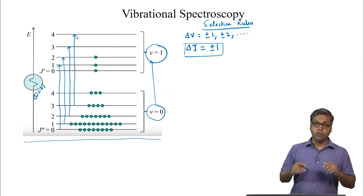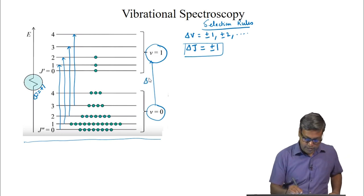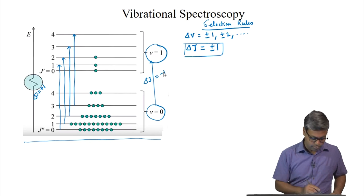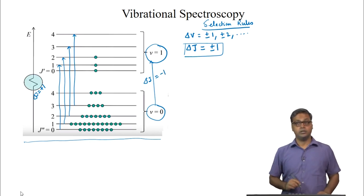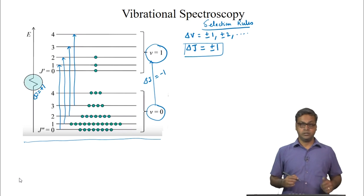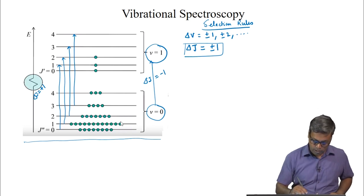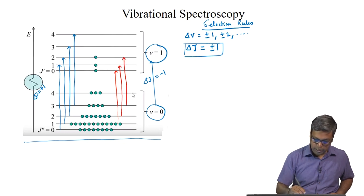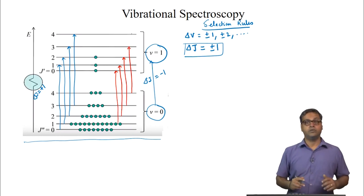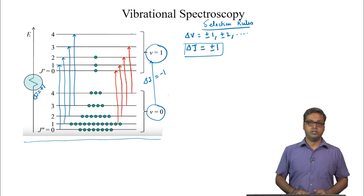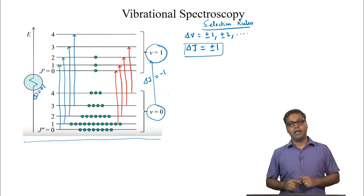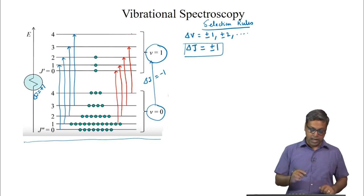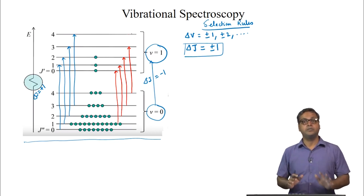Similarly, we can also have transitions where delta J = -1: from J=1 to J=0, then J=2 to J=1, J=3 to J=2, and J=4 to J=3. In the blue transitions J is increased by 1, and in the red transitions, as shown in the figure, J is decreased by 1.